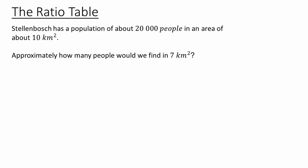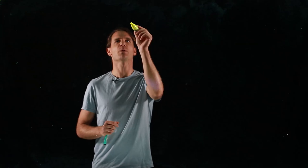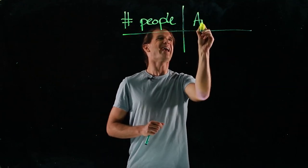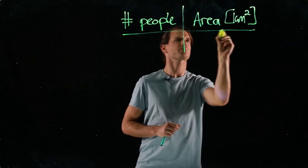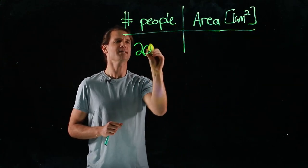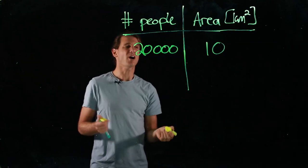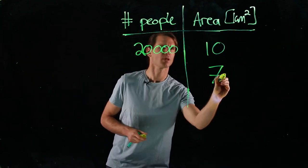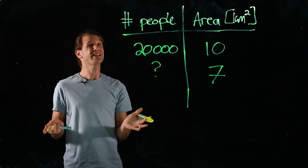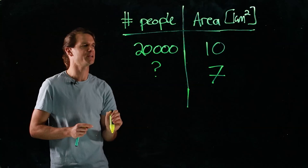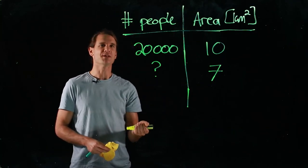Stellenbosch has a population of about 20,000 people in an area of about 10 square kilometers. Approximately how many people would we find in seven square kilometers? As before, the first step is to identify the quantities: number of people and area in square kilometers. The given information is 20,000 people in 10 square kilometers, and we want to find the number of people in seven square kilometers. It's not clear how to get from 10 to 7 directly — remember, in the ratio table you can never add or subtract, only multiply and divide.